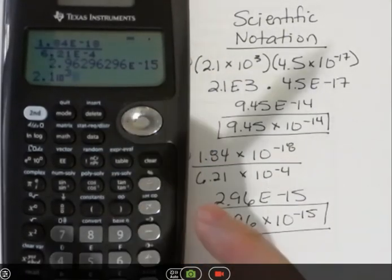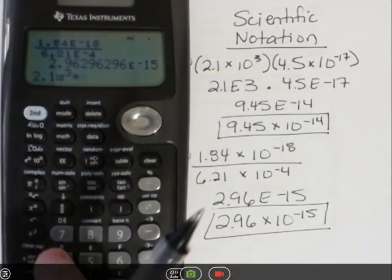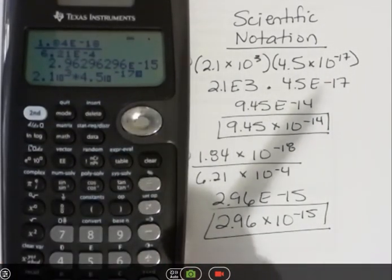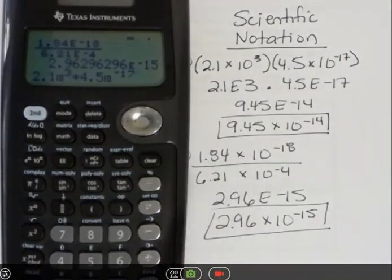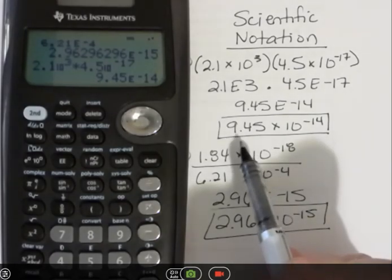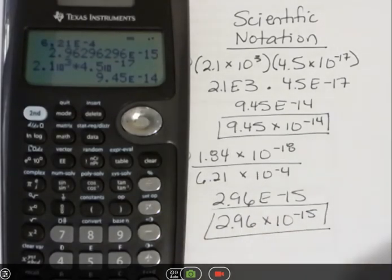Then I could enter out of that, say times, and then 4.5, hit that twice, to the 10th power, negative 17. Some people prefer that because it kind of looks a little bit more like what they see on the paper. Then just hit enter, and you're going to get that same answer, 9.45e negative 14.